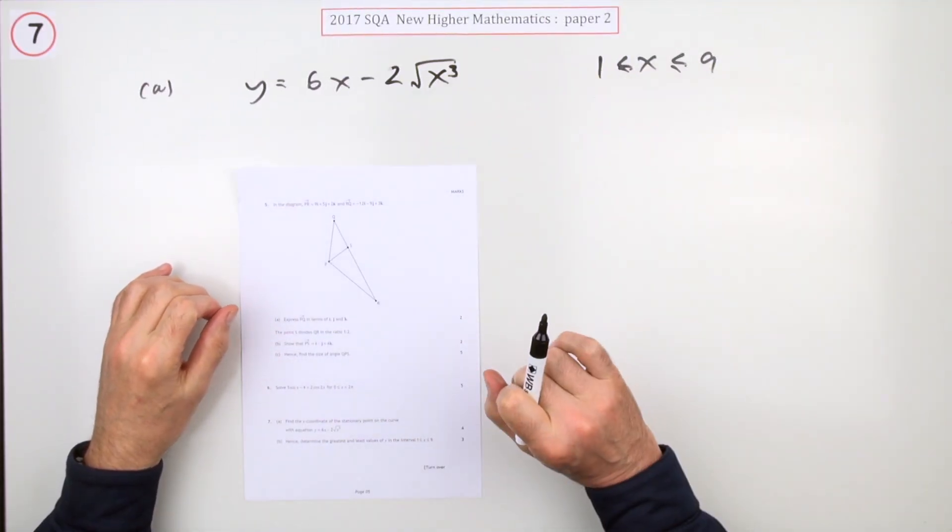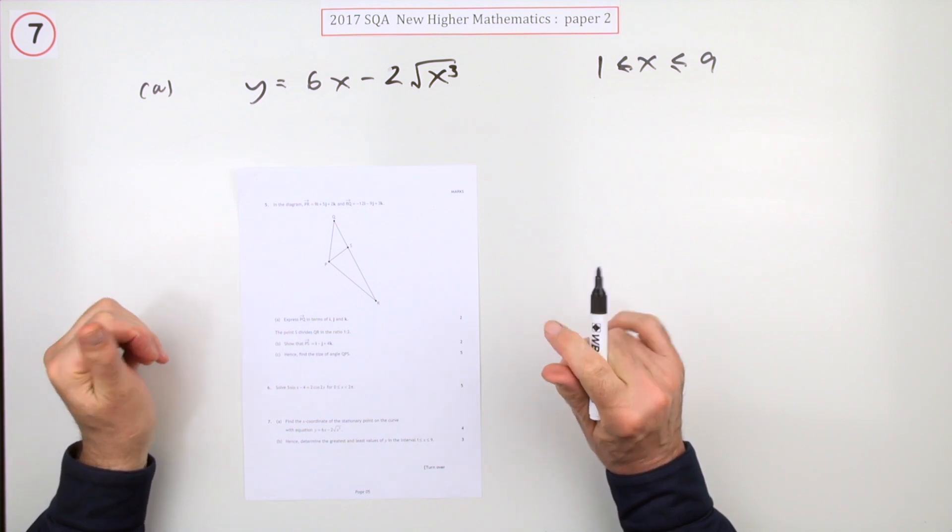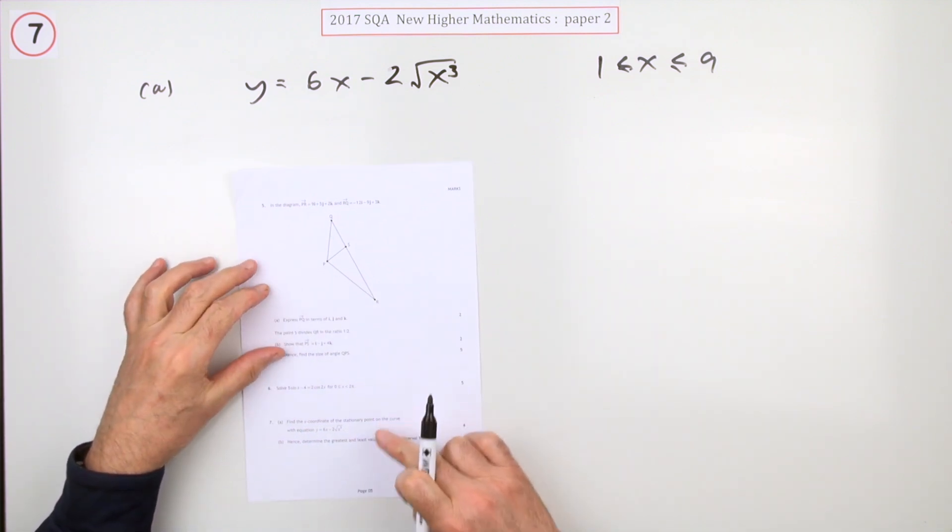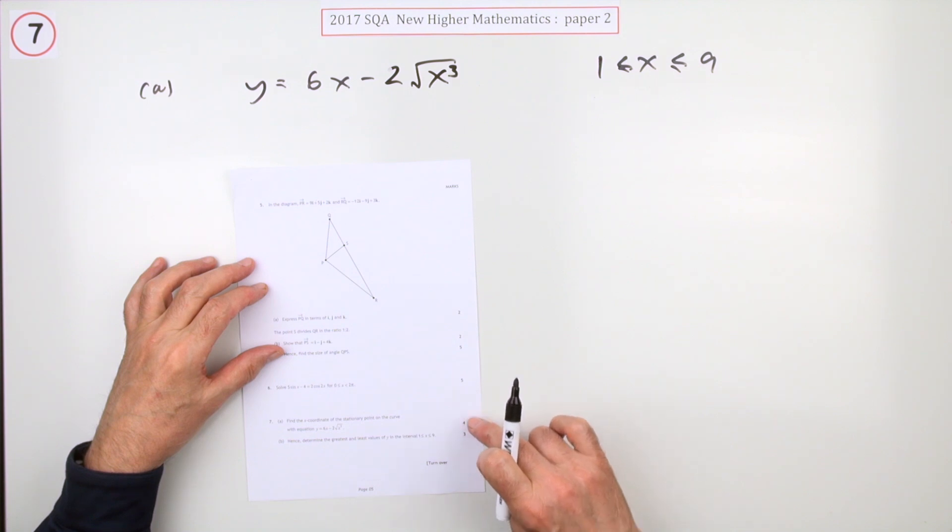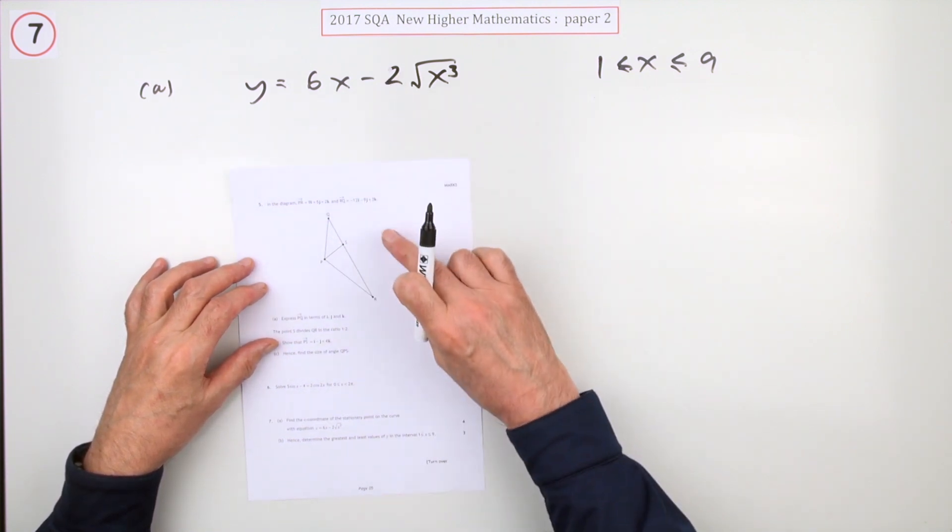So number seven then from paper two of the 2017 higher maths. Greatest and least values in an interval. First of all for four marks, what's the x-coordinate of the stationary point on the curve with this equation?